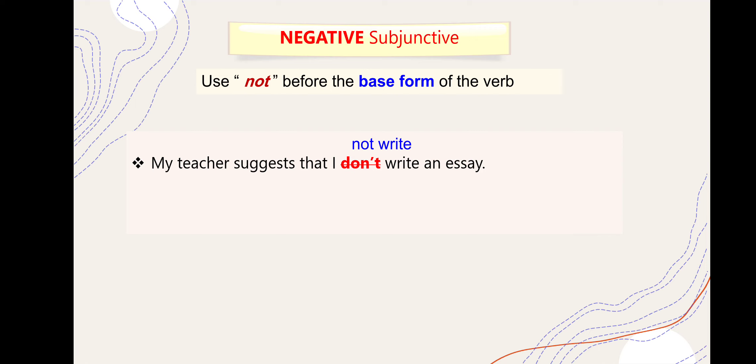يعني بعد 'that' نستخدم السبجكت - أياً كان الفاعل I، she، he - بعدين 'not' وبعدها الفعل مجرد. 'Ali insists that I not use his phone' - هنا 'shouldn't' خطأ، لازم تكون 'not use'. هنا بننهى عن فعل شيء.